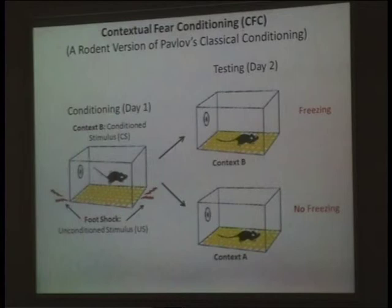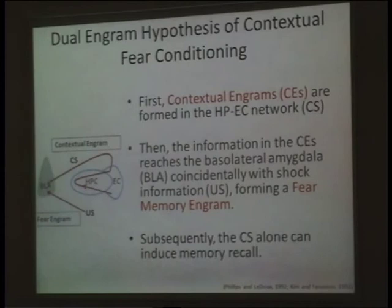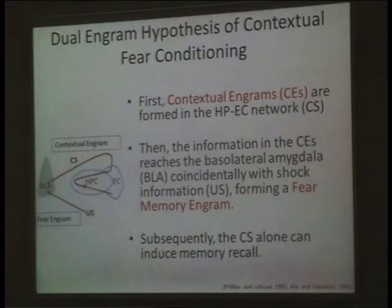The manipulation targets the hippocampus. This contextual fear conditioning paradigm actually involves two kinds of memories combined — what I call the dual engram. I call it a hypothesis, but it is really established fact.